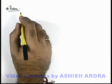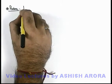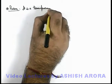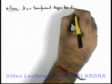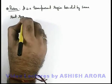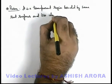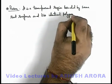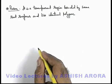Let us now study about a prism. Let us first define what a prism is. A prism is a transparent region bounded by some rectangular surfaces and 2 identical polygons. Depending on the shape of these polygons we define the nomenclature of a prism.